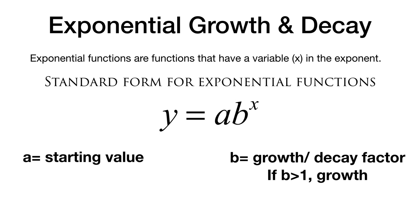If b is greater than one it's going to be growth, which means it gets bigger. But if b is between zero and one, it means that we're only using part of one, which means it'll actually get smaller — like seven times 0.5 is 3.5.